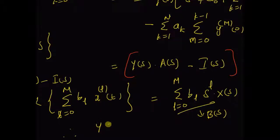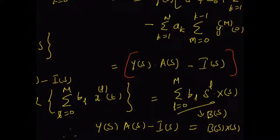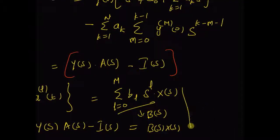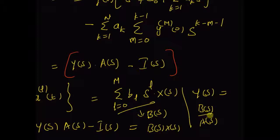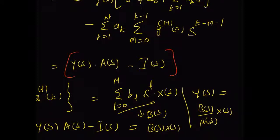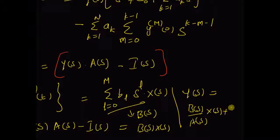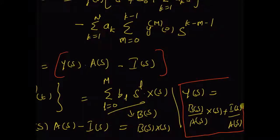Therefore, the final equation is Y(s) times A(s) minus I(s) equals B(s) times X(s). And upon simple transformation, we have Y(s) equals B(s) over A(s) times X(s) plus I(s) divided by A(s). So this is the representation of the output in the s domain: Y(s) = B(s)/A(s) · X(s) + I(s)/A(s).